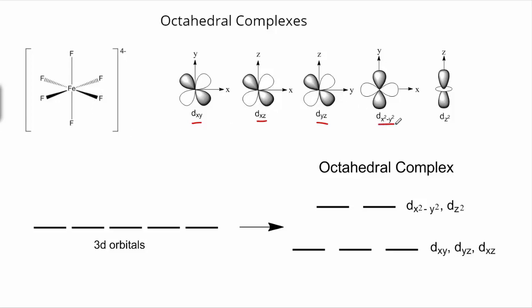On the other hand, dx²-y² and dz² have electron density right on the axes, where the ligands are coming in. So dxy, dxz, and dyz, being between the axes, are going to shift to lower energy. And dx²-y² and dz², lying on the axes when the ligands come in, are going to shift to higher energy. These five 3d orbitals are degenerate unless ligands are bound. This difference in energy, we symbolize as delta or delta octahedral.